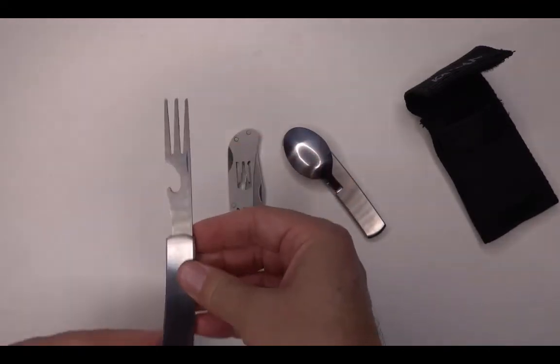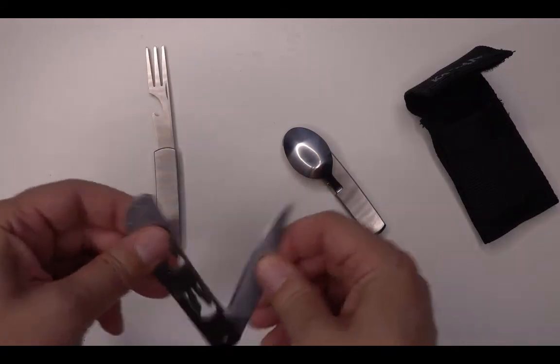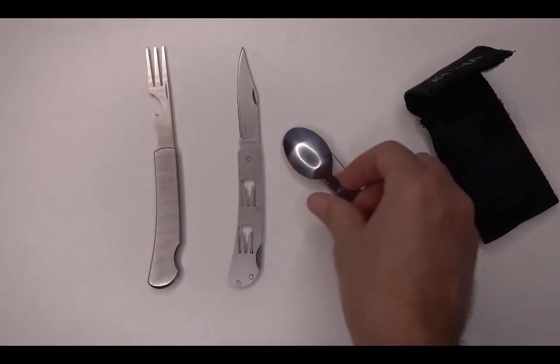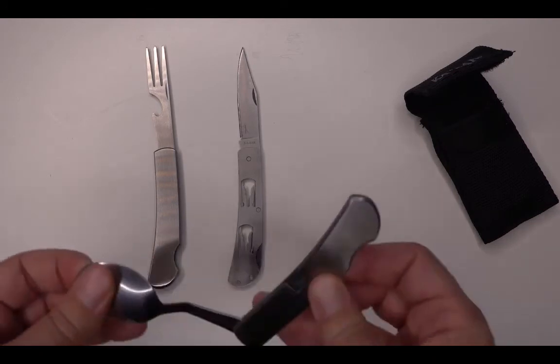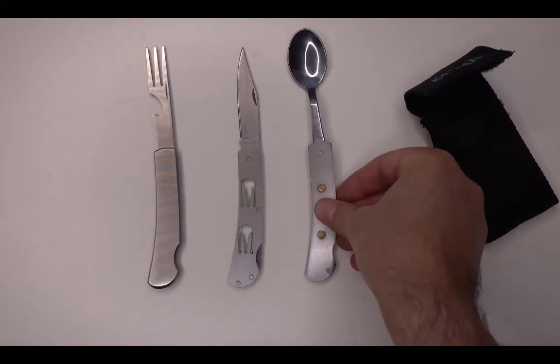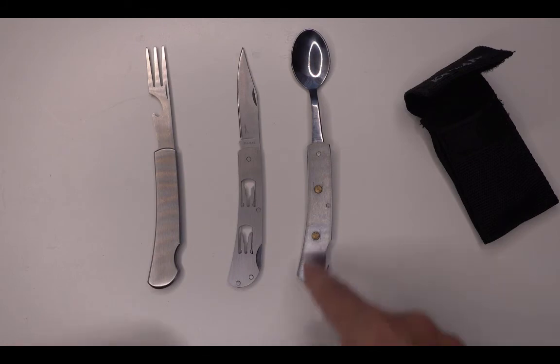So this is the fork with a bottle opener, the knife and the spoon. It's magnetic and with studs so that you can reassemble them.